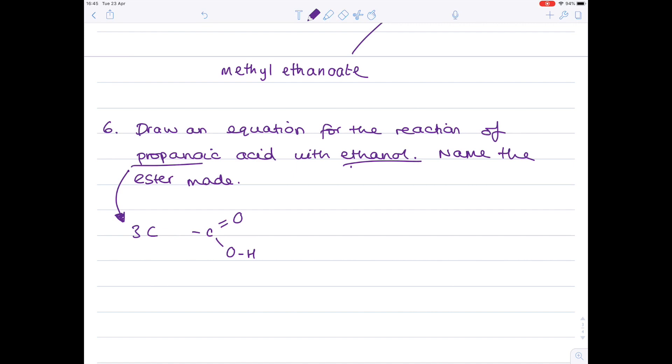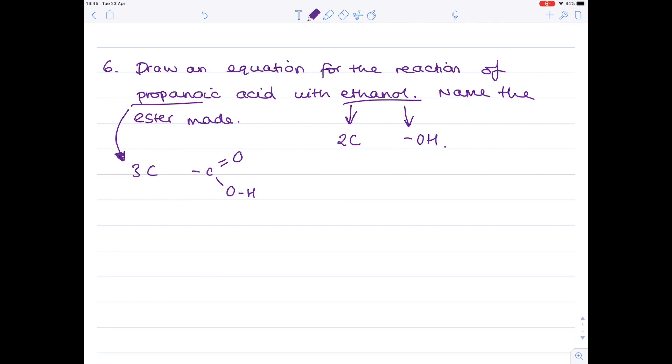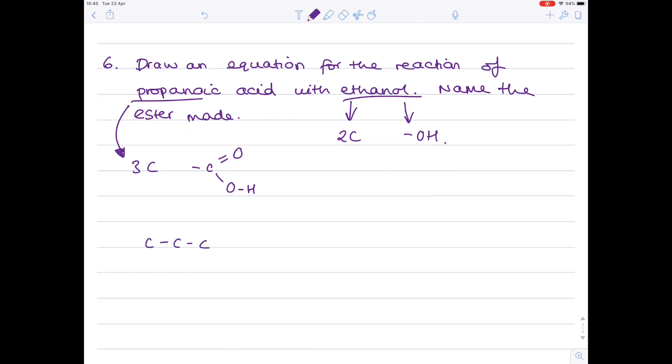Looking now at ethanol. Eth means it contains two carbons. Ol means it contains the alcohol functional group. So I'm ready to draw both reactants. So propanoic acid, first of all. Ethanol, next. Reversible reaction again.